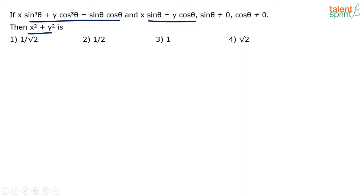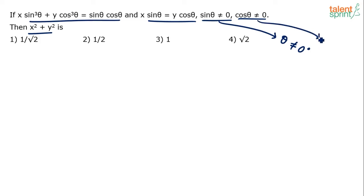We need to find the value of x² + y². From the conditions: sinθ ≠ 0 implies θ ≠ 0°, and cosθ ≠ 0 implies θ ≠ 90°. So theta cannot be 0 or 90 degrees, but it can take any other value. Let us substitute a value for theta — can we take θ = 45°? Yes, we are not going against the question.